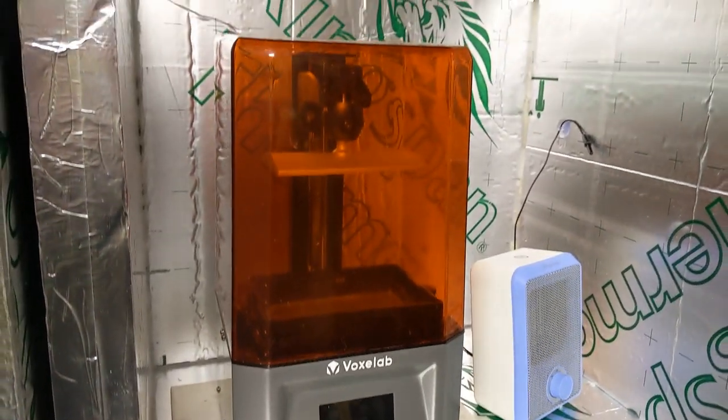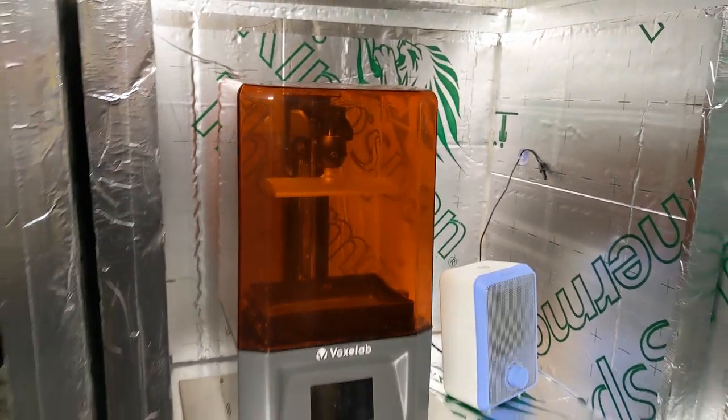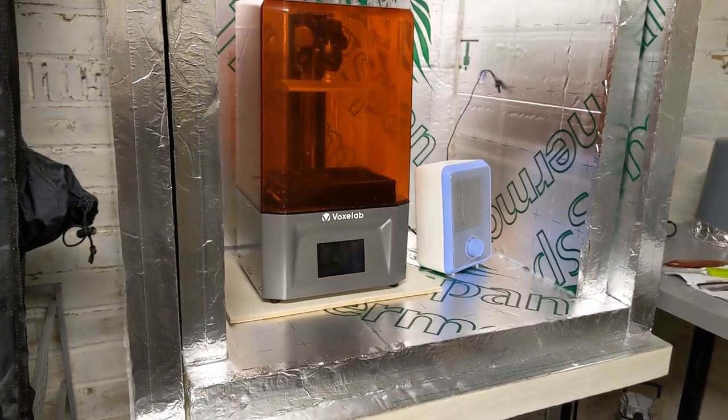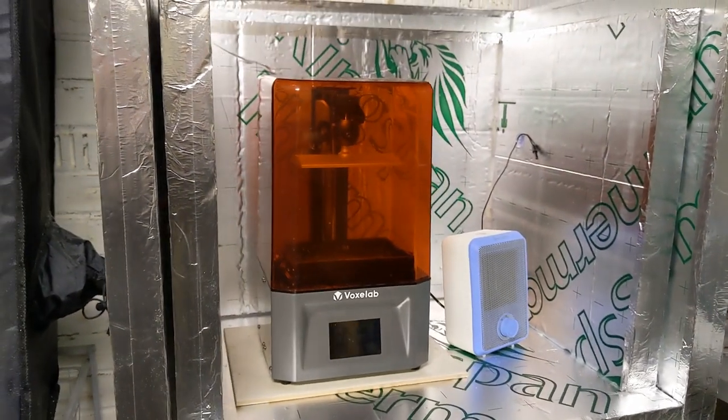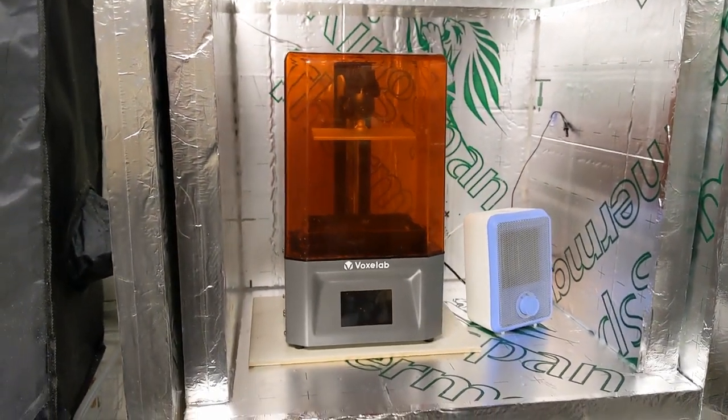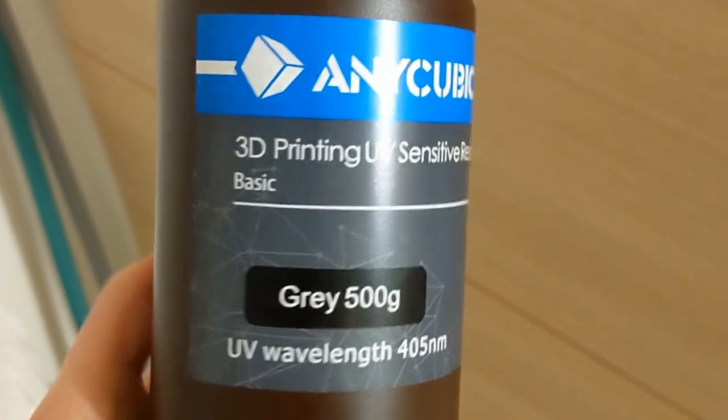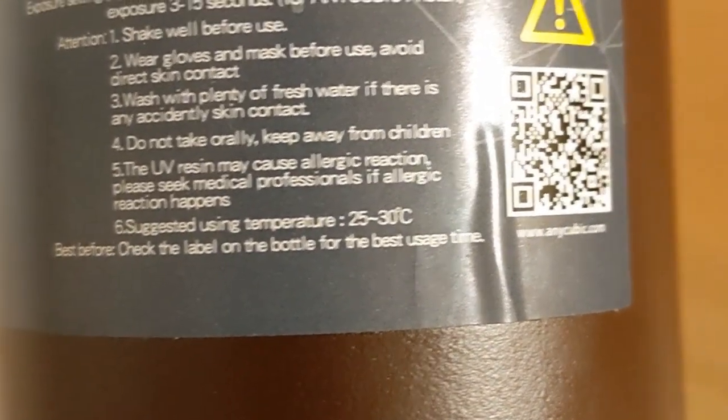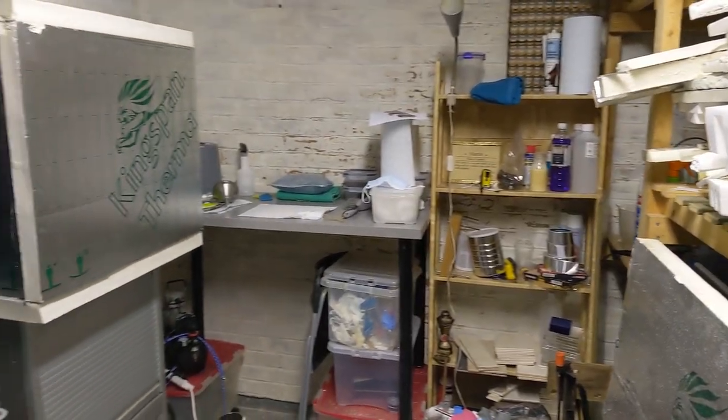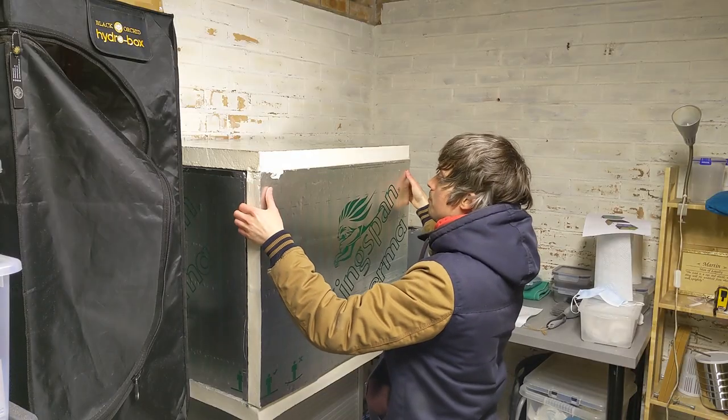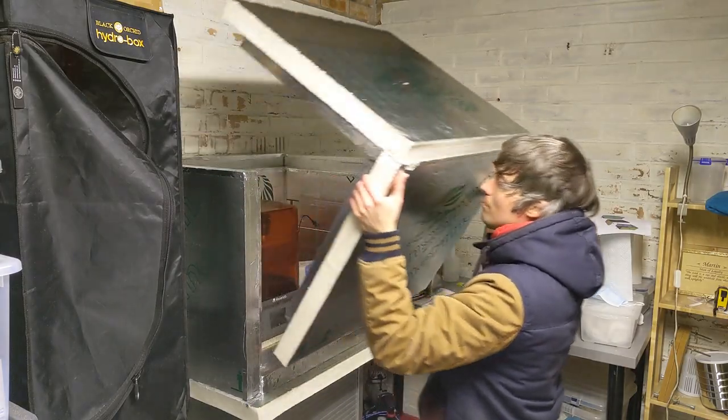The very first thing that put me off buying a resin 3D printer was the fumes it gives off. It meant having it indoors would not be an option, so I thought I could keep it in the garage. Unfortunately, most resin works best between 20 and 30 degrees. Being in the UK, my garage is always cold, so we need an outdoor enclosure to help control the temperature.